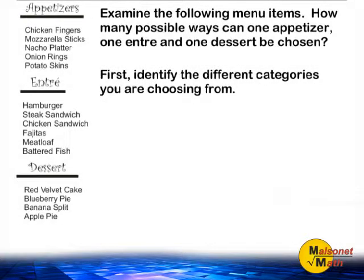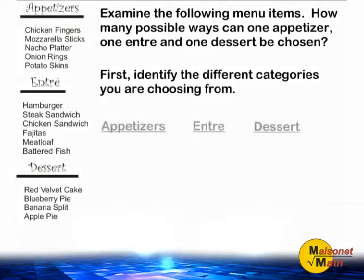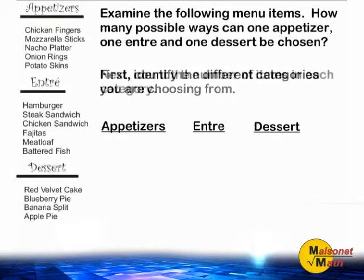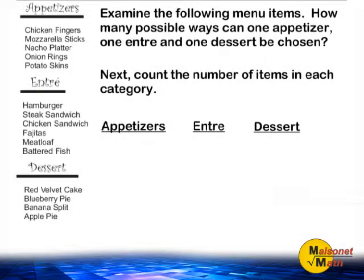To use the counting principle, simply identify the different categories that you are choosing from. We are choosing from three categories: appetizers, entrees, and desserts. After identifying your different categories, count the number of items available in each category.